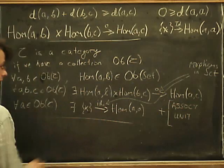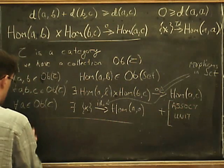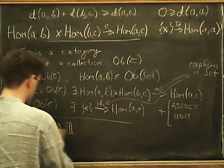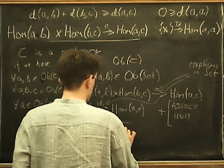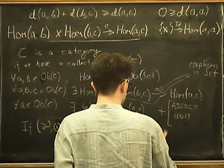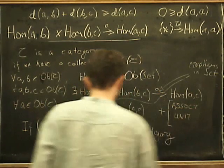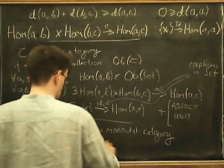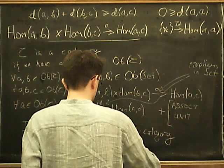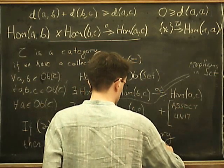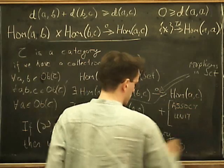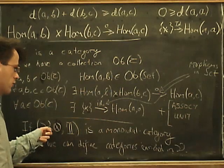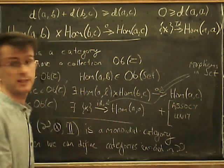It turns out the right thing to do is to use a monoidal category. So if V is, well let's say, V tensor 1 is a monoidal category, then we can define categories enriched in V. So one example you might want to think about while I'm writing this out is, say, V is something like a category of abelian groups, or the category of vector spaces, something like that.